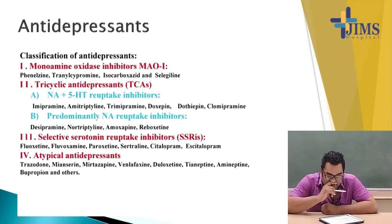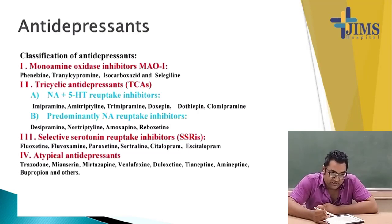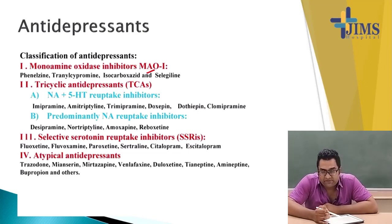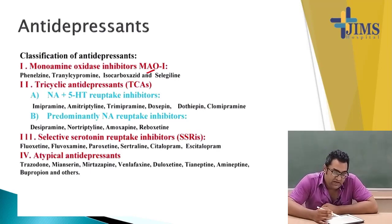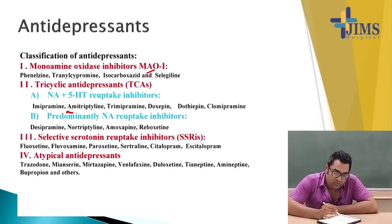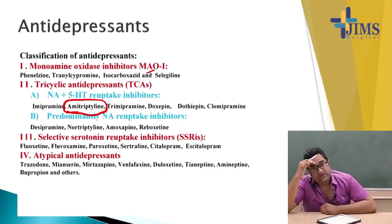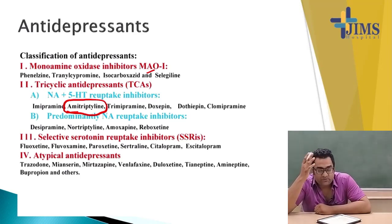Antidepressants. The classic antidepressants are MAO inhibitors, TCA inhibitors, SSRIs, and atypical antidepressants. MAO inhibitors were the first antidepressants discovered but are now very selectively used due to high side effects. TCAs are also selectively used, but amitriptyline is widely used because long-term continuation studies show it is the best TCA antidepressant.